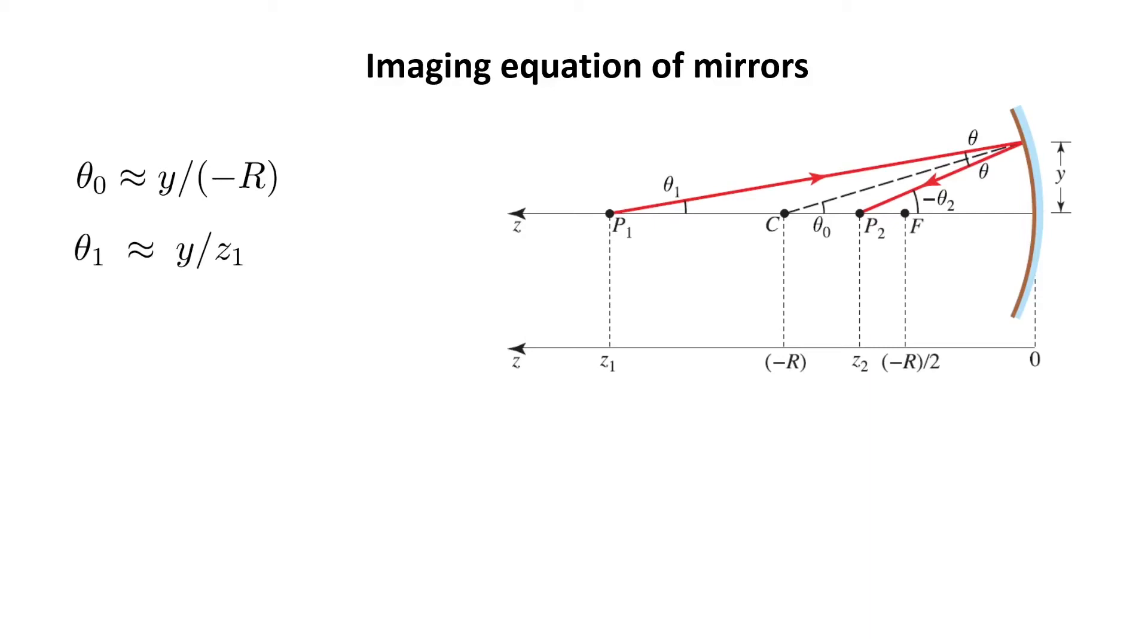Then, theta 1 here is y, the height, divided by the distance from the mirror. The distance of point P1 from the mirror is z1.